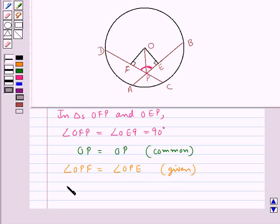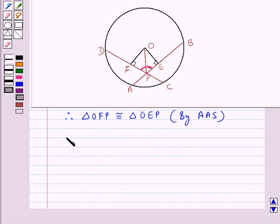So therefore, we get triangle OFP is congruent to triangle OEP. This is by the AAS congruence rule. So this means that OF is equal to OE.